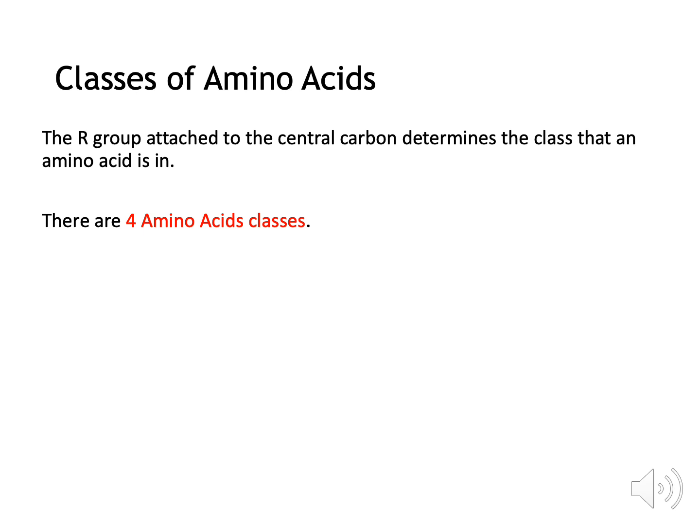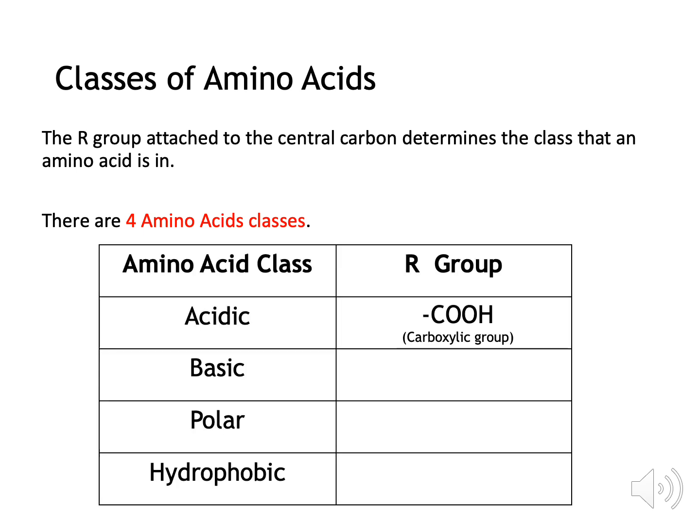The R-group attached to the central carbon atom determines the class that the amino acid is in. There are four amino acid classes. The first is acidic, where the R-group is a carboxylic group. The second class is basic, where the R-group is an amine group. Polar amino acids have a hydroxyl R-group. And finally, hydrophobic amino acids have a hydrocarbon R-group.